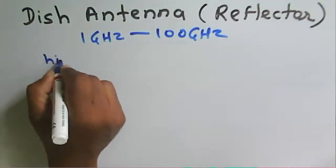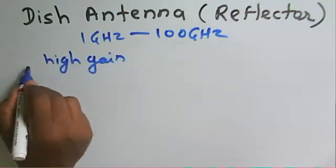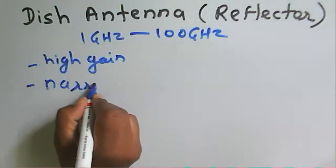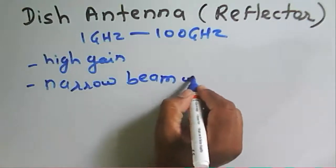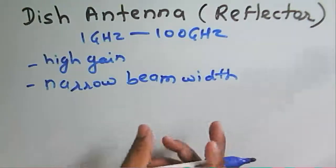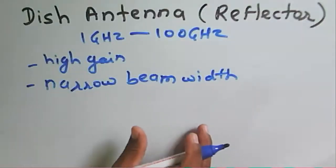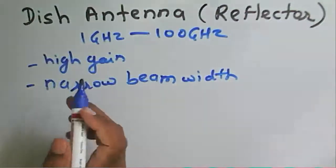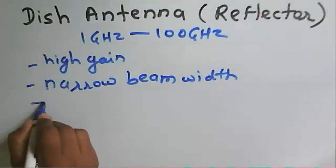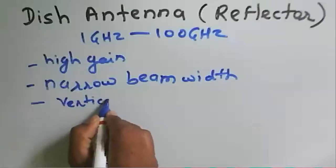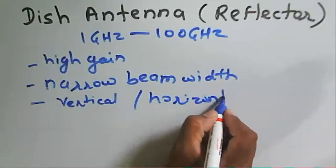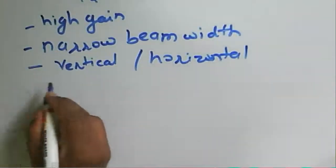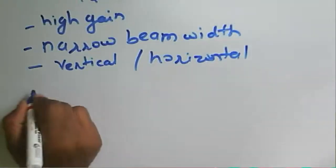This antenna has a high gain and a narrow beam. The narrow beam depends upon the antenna structure. This antenna can work in both the vertical plane as well as the horizontal plane. So that is about the reflector antenna. Now we will see what are the various types of reflector antenna — it will work in both planes, vertical or horizontal.